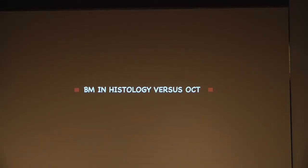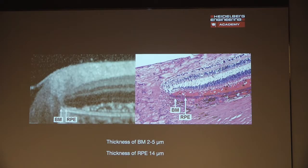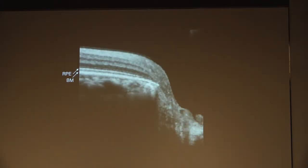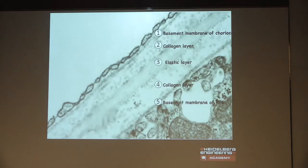Bruch's membrane in histology versus OCT: if you take the histology of the retinal layers, the thickness of Bruch's membrane is only 2 to 5 micrometers, and the RPE is about 14 micrometers — about 3 times thicker than Bruch's membrane. But in the OCT picture, the RPE and Bruch's membrane look equally the same thickness, or sometimes Bruch's membrane even appears brighter and thicker. This is because OCT works on the principle of reflectance from boundaries, and in Bruch's membrane there are 5 layers which are all reflective, making it look thicker than it actually is.